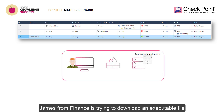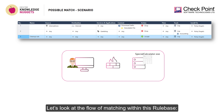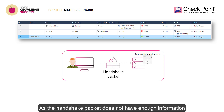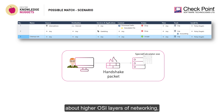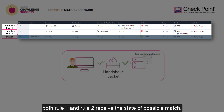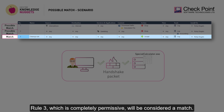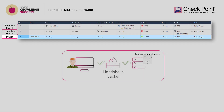James from Finance is trying to download an executable file for an advanced calculator he found on the net. Let's look at the flow of matching within this rule base. As the handshake packet does not have enough information about higher OSI layers of networking, both Rule 1 and Rule 2 receive the state of possible match. Rule 3, which is completely permissive, will be considered a match.